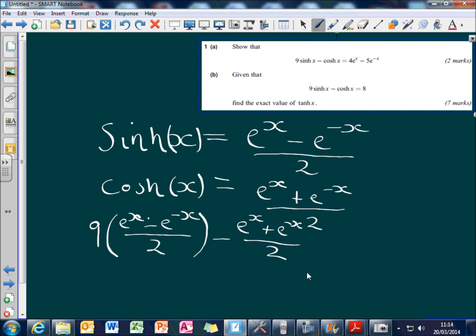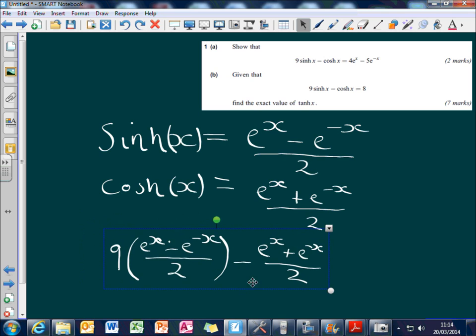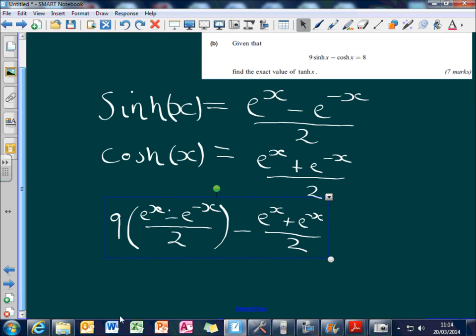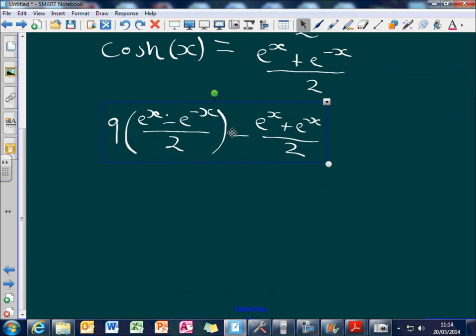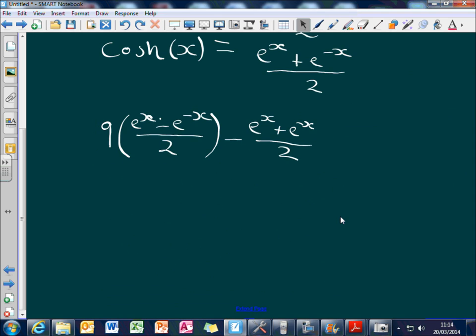Over 2. That can then be written as 9 e to the x minus e to the minus x minus e to the x plus e to the minus x all over 2.